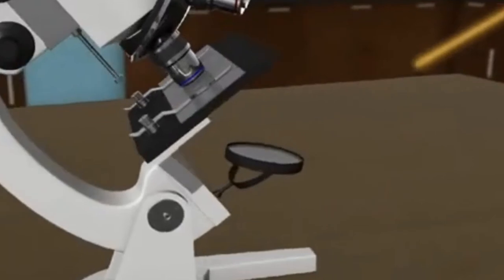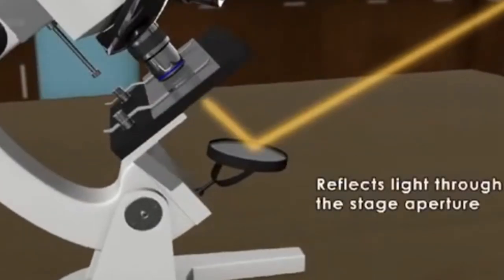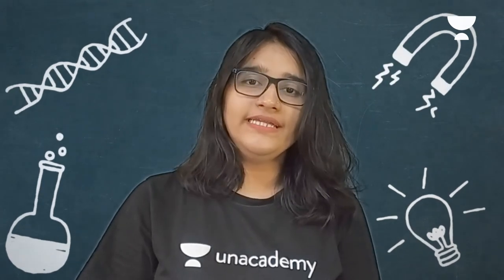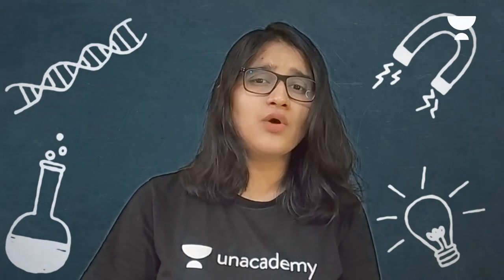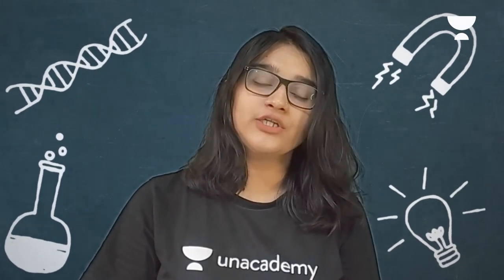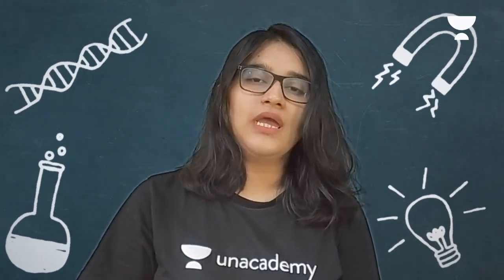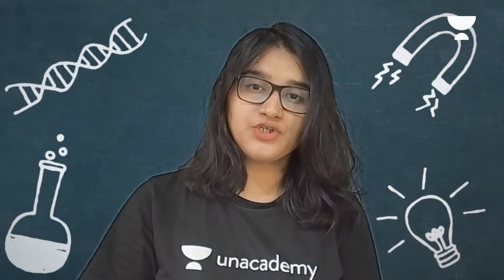Next is the reflector — a mirror attached above the base. One side of the reflector is a plane mirror and the other is a concave mirror. When the incident light is strong, the plane mirror is used; when the light is weak, the concave side is used. This light is directed to the object on the stage via the diaphragm and the condenser.